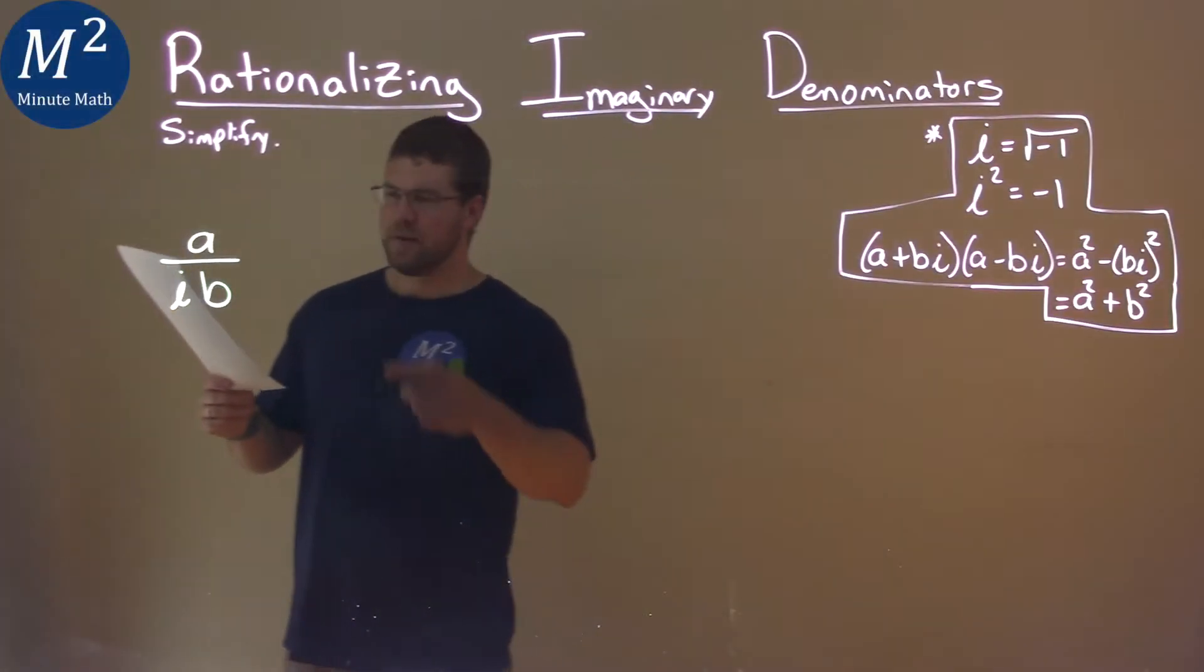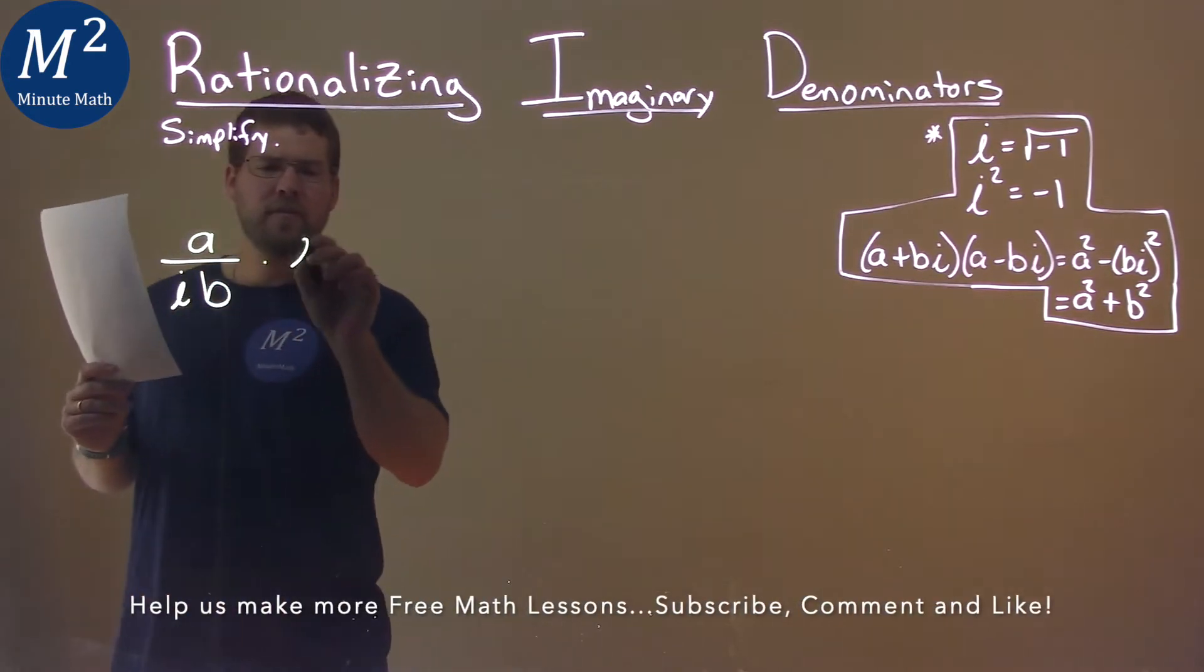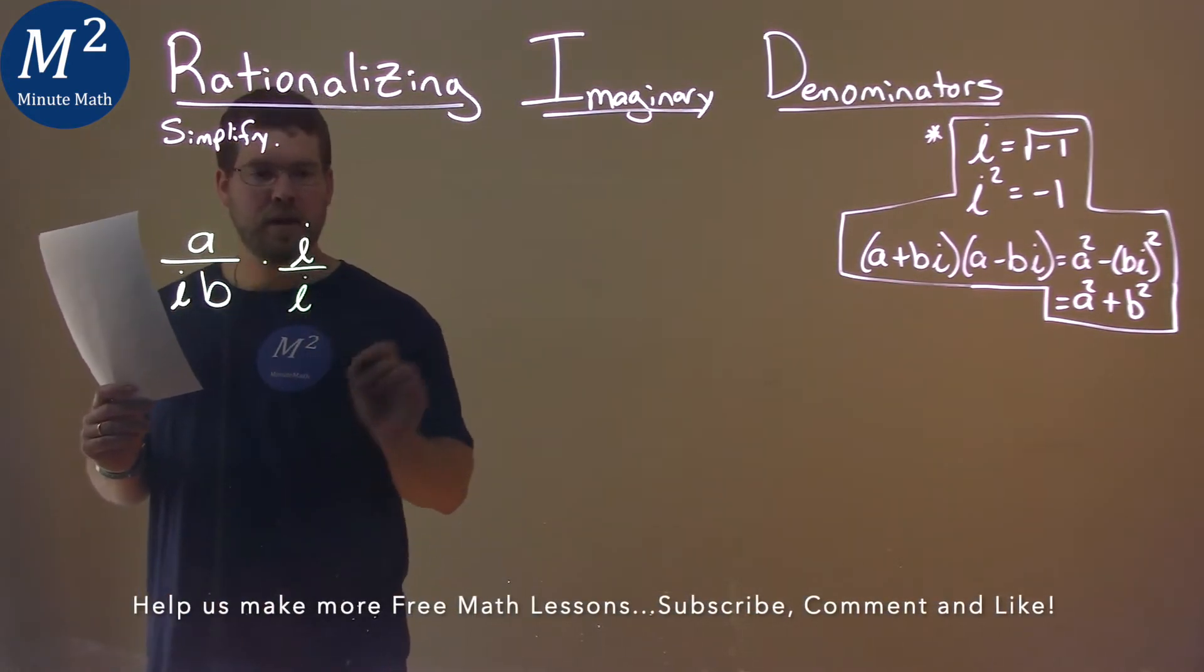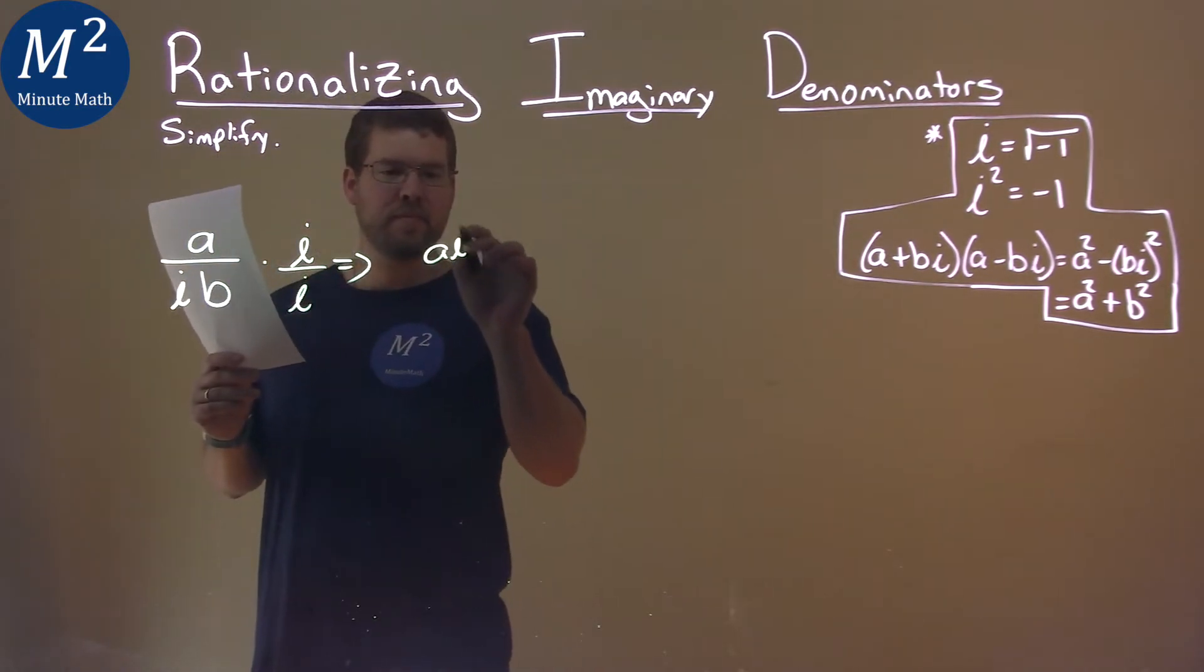We're given this problem right here, A over IB, and we want to simplify this. We want to multiply this by I over itself. The numerator, A times I, is AI. Pretty easy. Artificial intelligence.